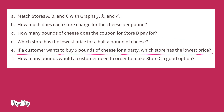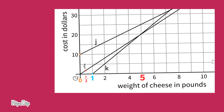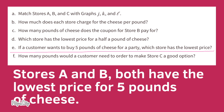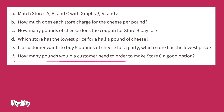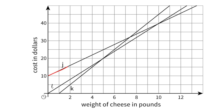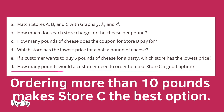If a customer wants to buy five pounds of cheese for a party, which store has the lowest price? Lines J and K intersect exactly at five pounds and twenty dollars. Above that, line J represents five pounds at twenty-five dollars. Lines L and K — Stores A and B — both have the lowest price at five pounds. How many pounds would a customer need to order to make Store C a good option? Line J intersects line K at ten pounds of cheese, meaning that if a customer buys more than ten pounds, Store C becomes the best option.